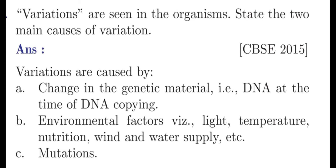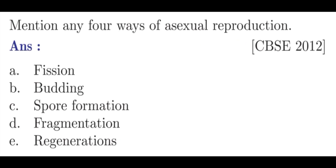Question 3: Mention any 4 ways of asexual reproduction. Answer: Fission, Budding, Spore formation, Fragmentation, Regeneration.